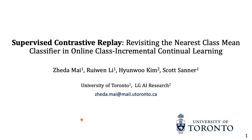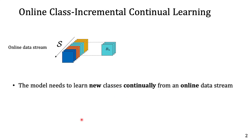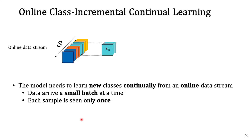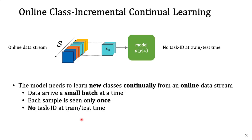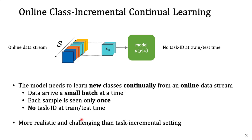Hi, my name is Zidamai from the University of Toronto. I'm going to present a recent paper: supervised contrastive replay. In this paper we focus on the online class incremental setting, where the model needs to learn new classes continually from an online data stream. The data arrives in small batches at a time, and the model is only allowed to see each sample once. The task ID is not available at either training or testing time, so this setting is more realistic and challenging than the traditional task incremental setting.